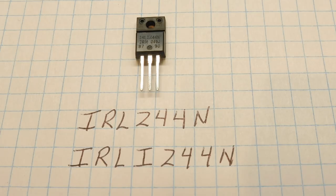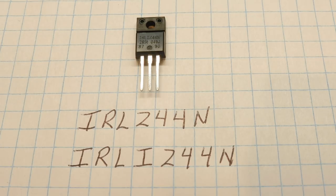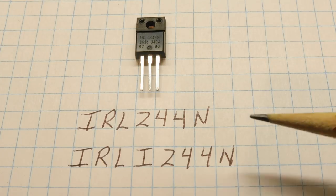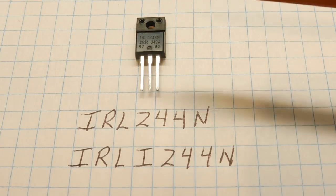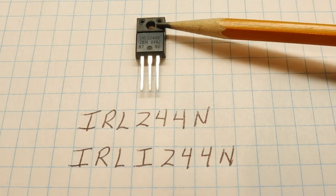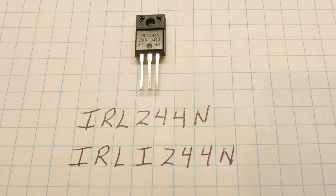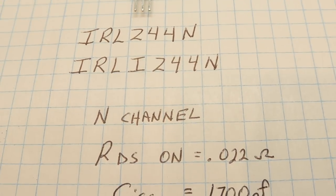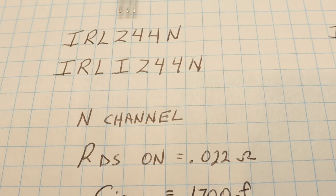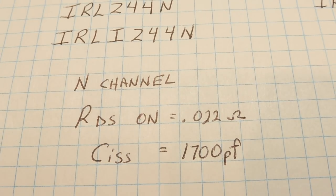There are two power MOSFETs that I use on my projects. One of them is the IRLZ44N. The L in the part number means logic level, so we can drive the gate to source with the output of a 5-volt microcontroller and turn this MOSFET fully on. The other part number, IRLIZ44N — the I means insulated. On this tab package, the tab is plastic, so it's insulated, meaning I can bolt it to my enclosure without worrying about shorting out my drain. The specs on the IRLZ44N: it's an N-channel MOSFET, the RDS (drain to source on resistance) is 22 milliohms, and the CISS (gate to source capacitance) is 1700 picofarads.